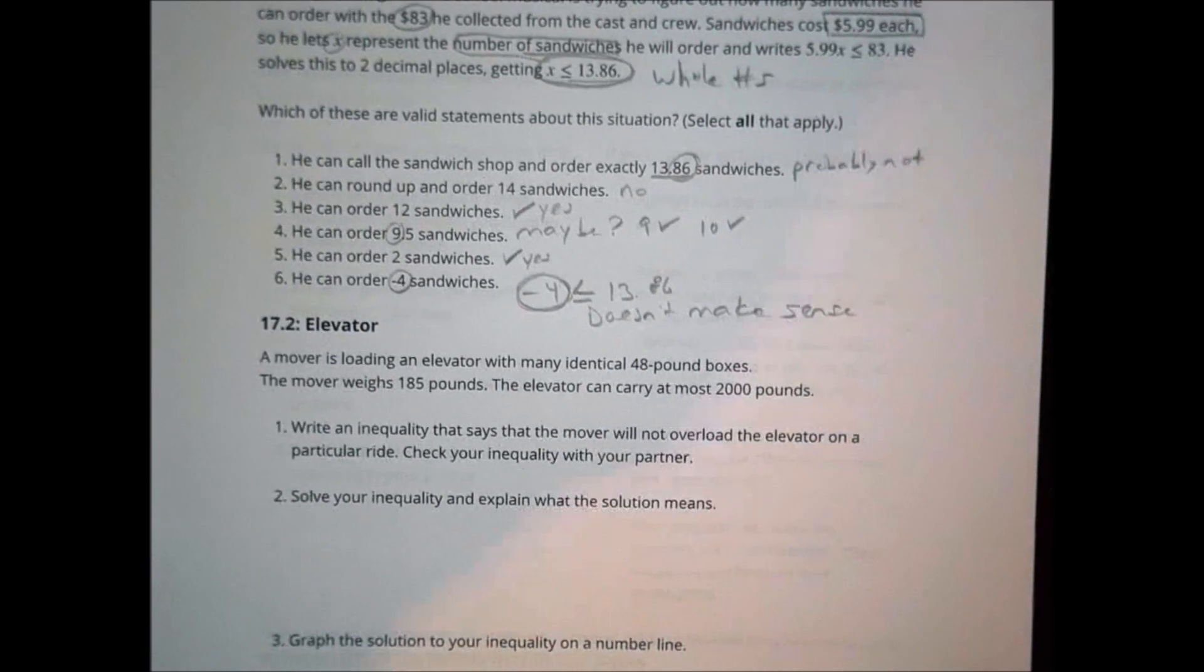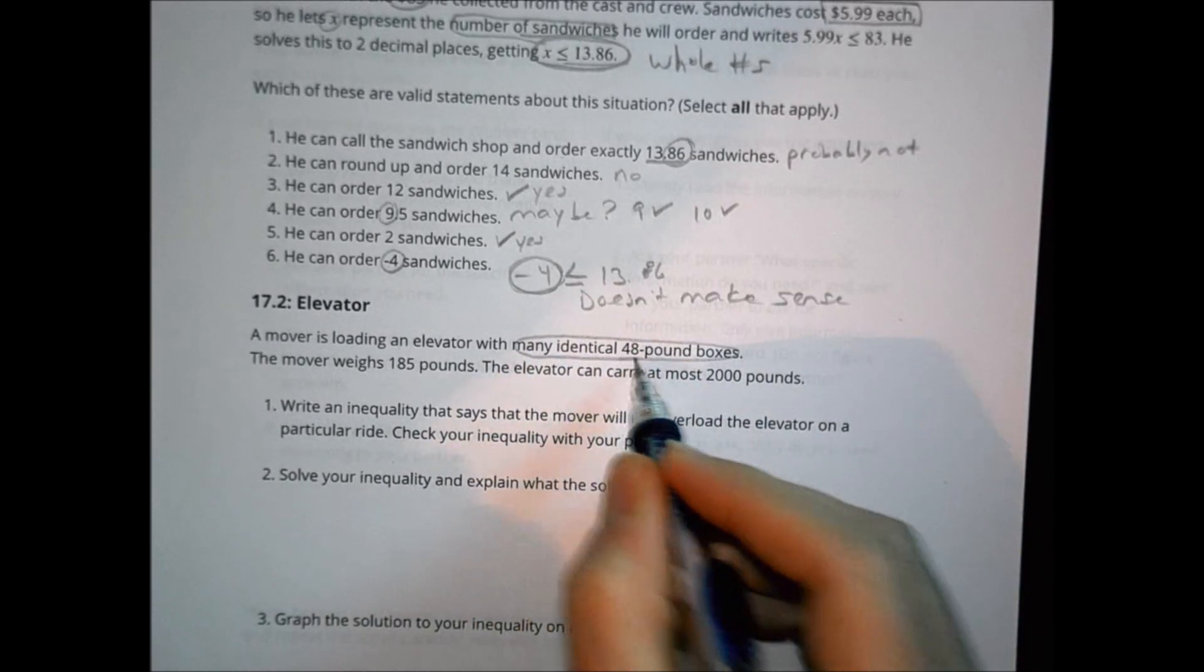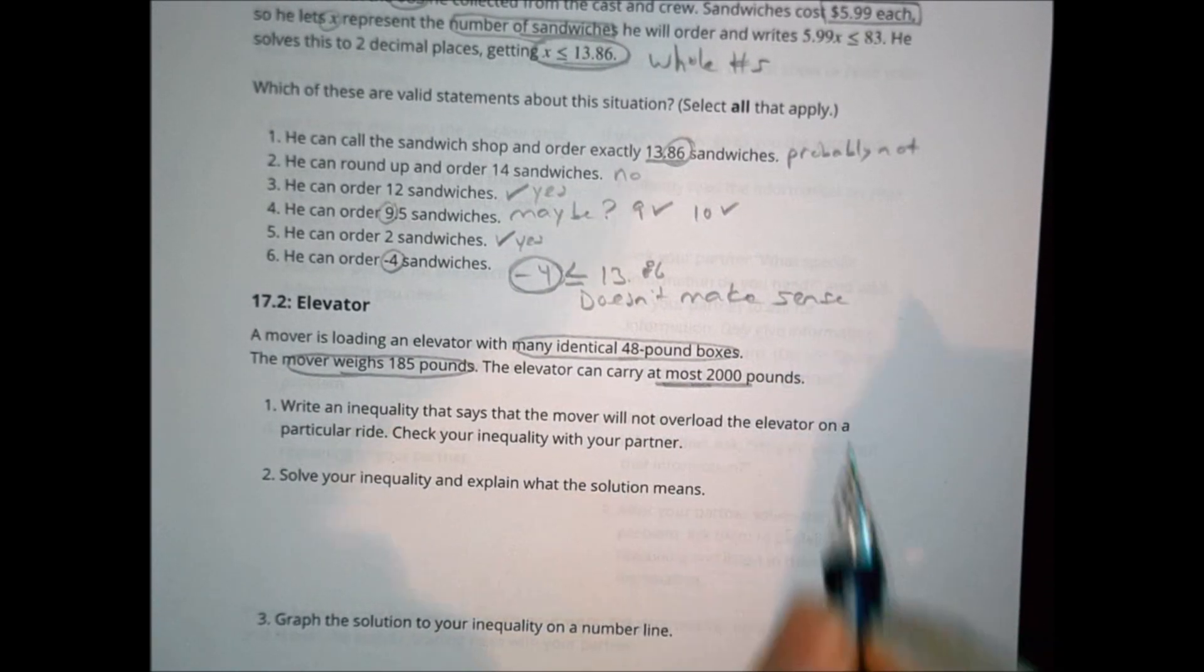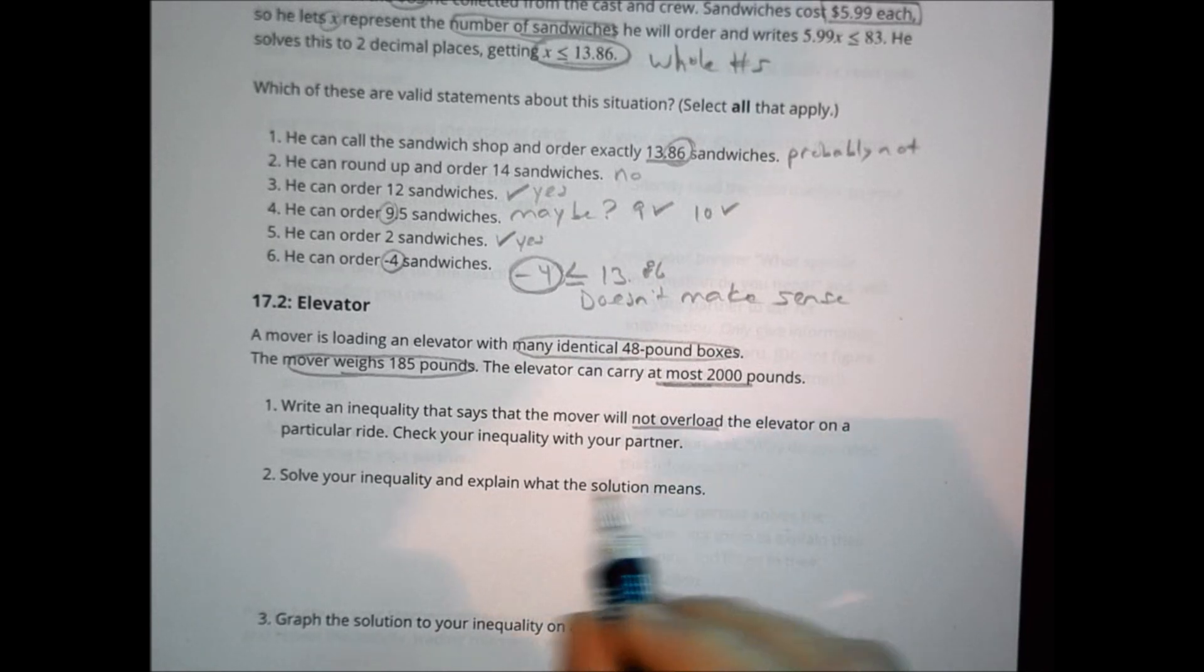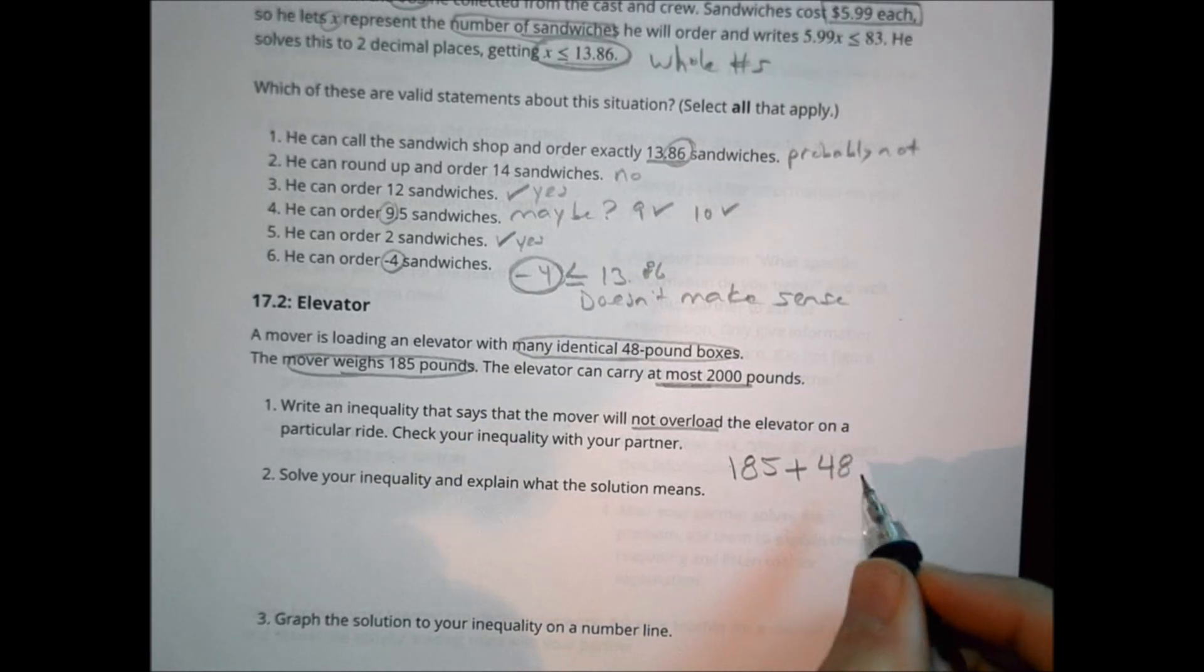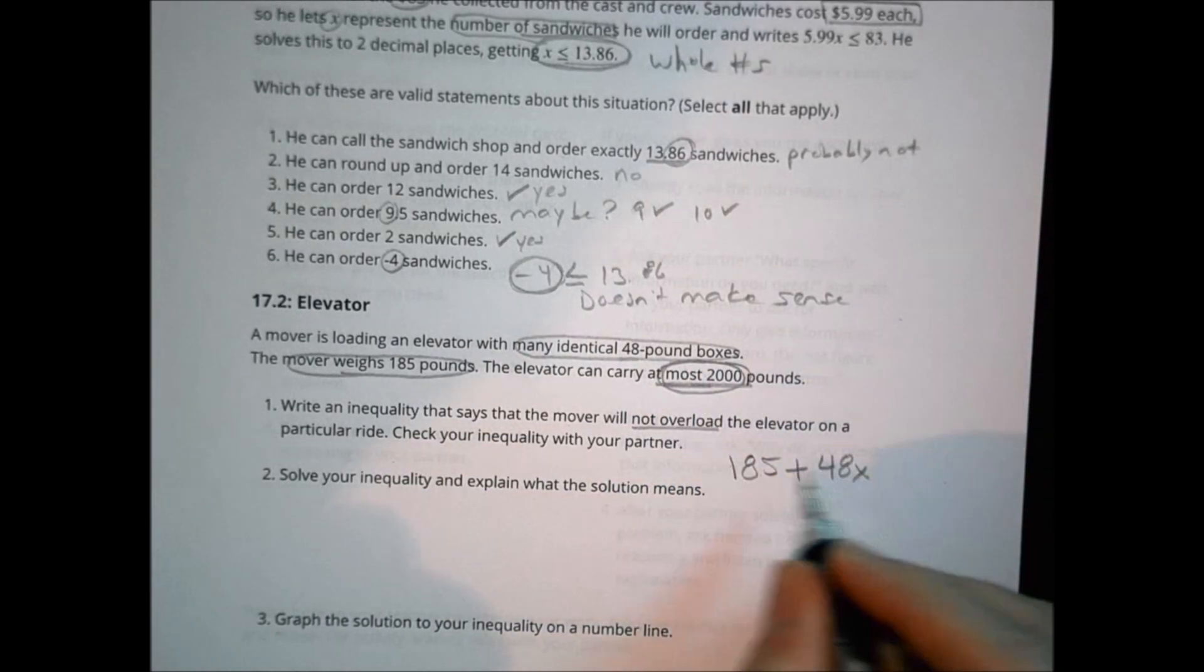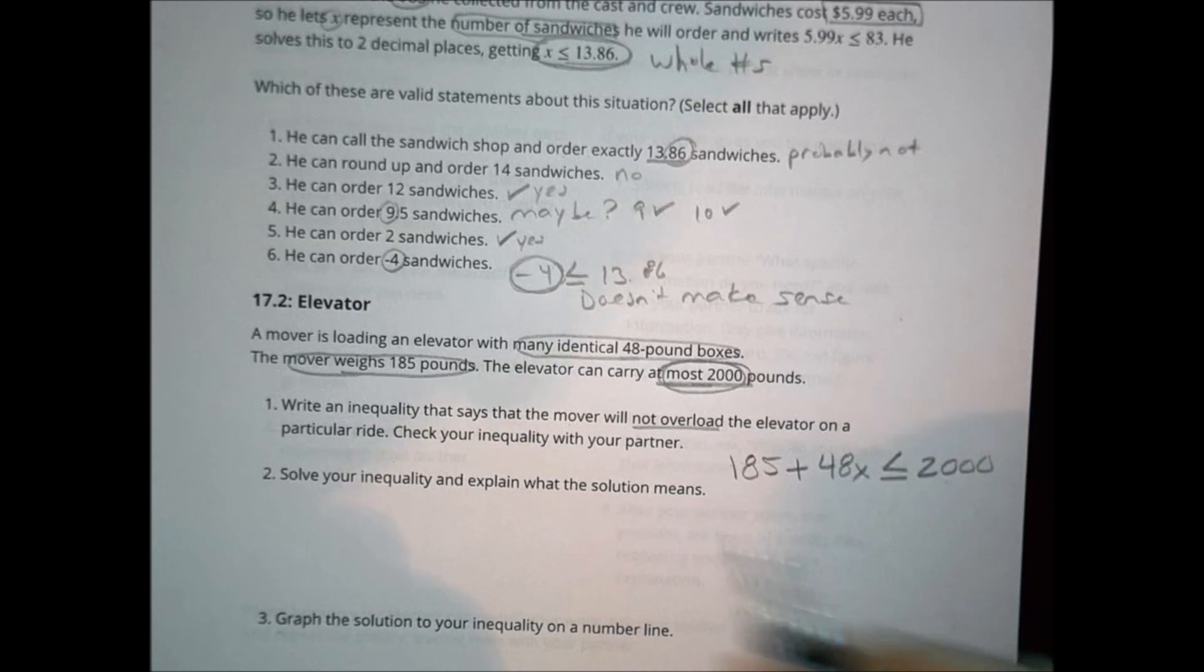The second question is about an elevator. A mover is loading an elevator with many identical 48 pound boxes. The mover weighs 185 pounds. The elevator can carry at most 2,000 pounds. Write an inequality that says the mover will not overload the elevator. So we take the mover, 185 pounds, and we add 48 pound boxes. We don't know how many of those he has. But we know that it can't go over 2,000. So this combination has to be less than or equal to 2,000 pounds.